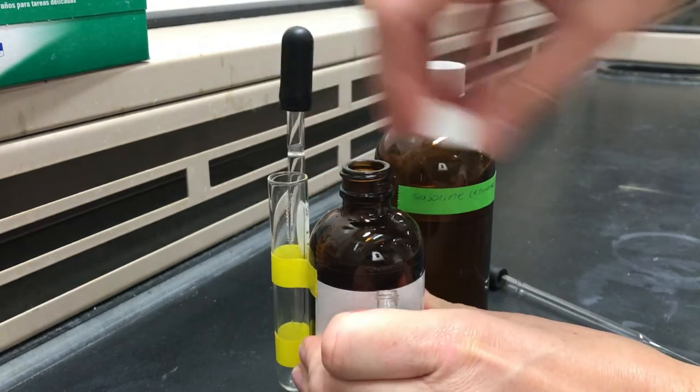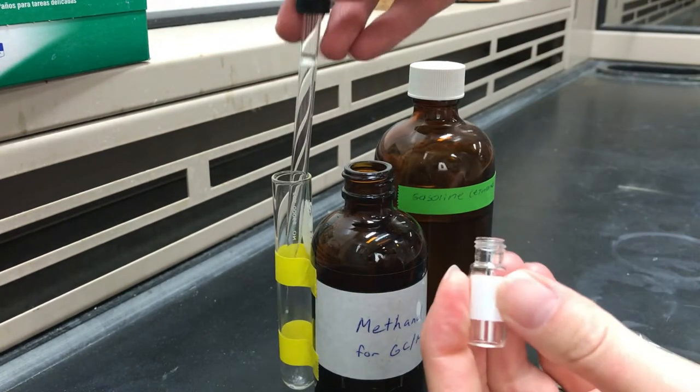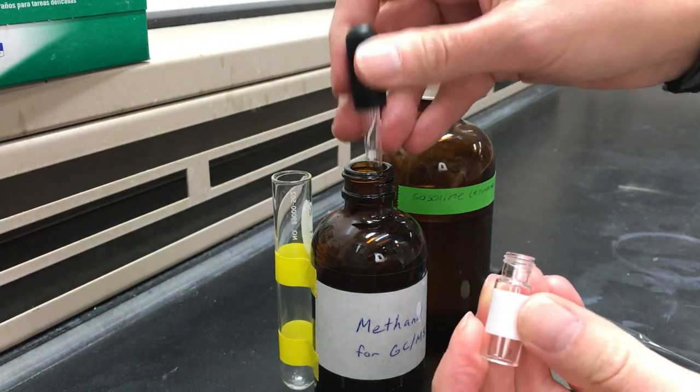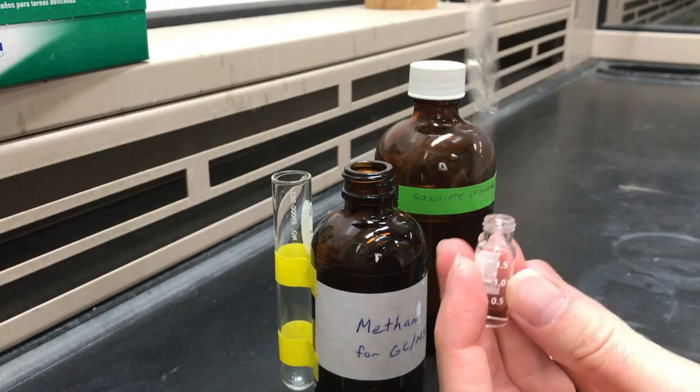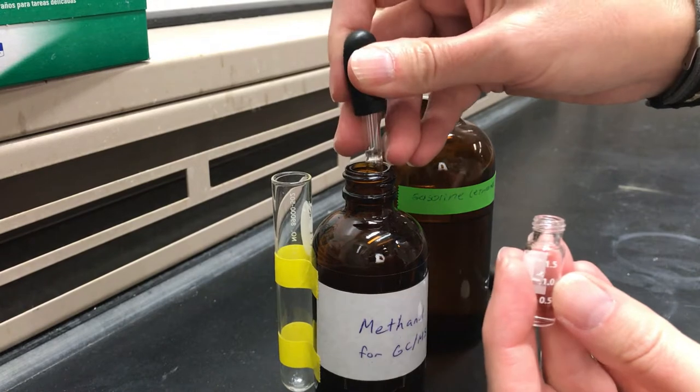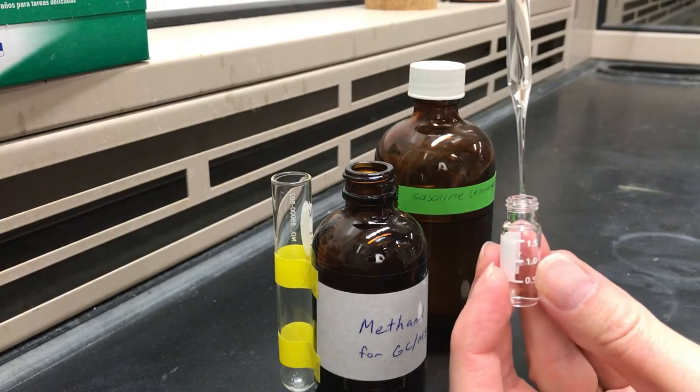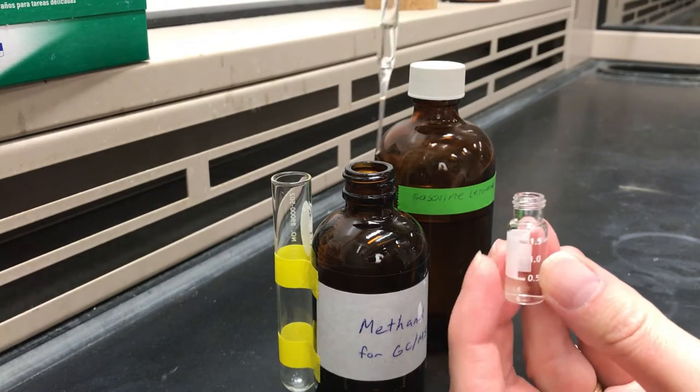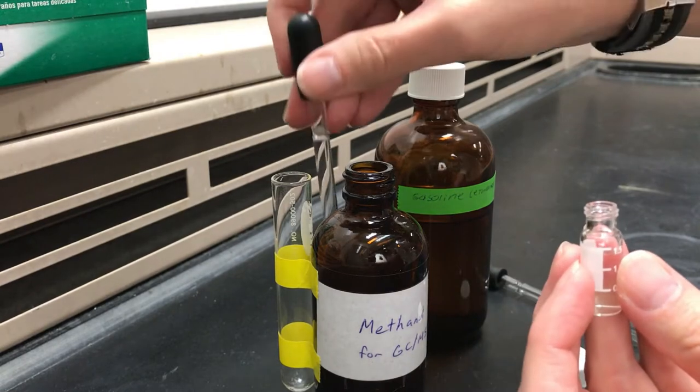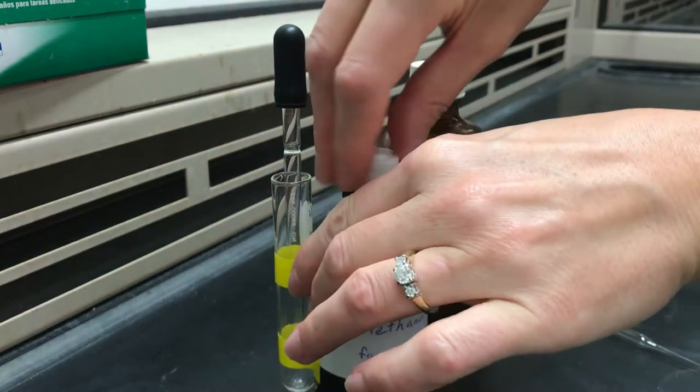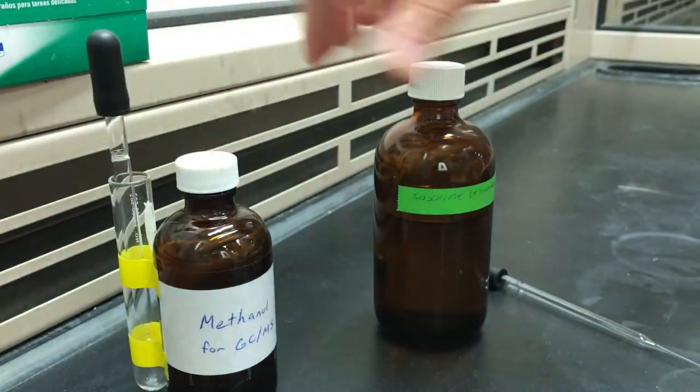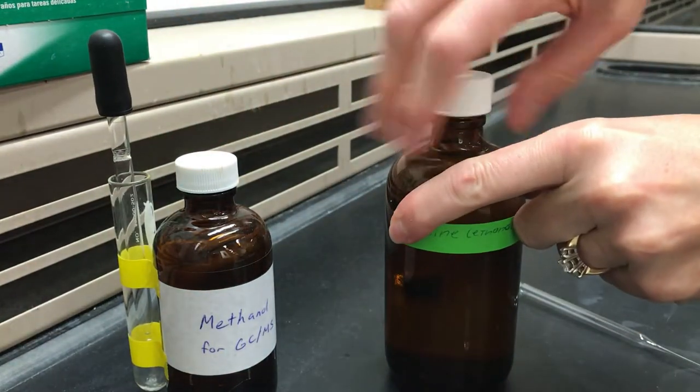So let's start with how to prepare a sample. You want to take a very small GC vial and fill it with a solvent. At my college we tend to use methanol but you can use a lot of low boiling solvents like acetone. You fill it to the 1.5 milliliter mark on the GC vial and then you normally add one drop of the sample that you want to analyze.